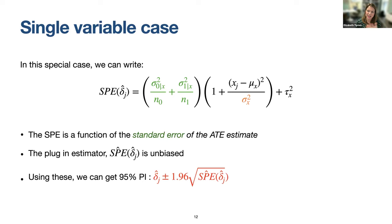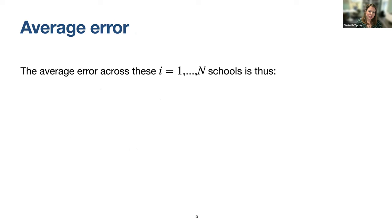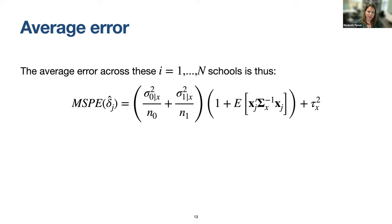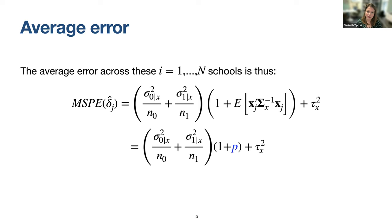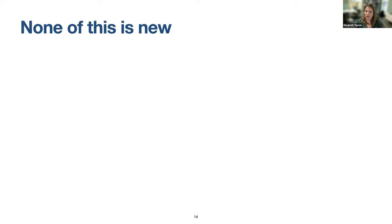I could also think about average error. The single-unit case gives separate values for each prediction, but if I'm planning a study I want some aggregate. The average error across the N schools we're predicting is just an expectation across them. Because our sample is a random sample from the population, this becomes a function of that residual variation, P — the number of predictors in the model — and that residual variation at the end.